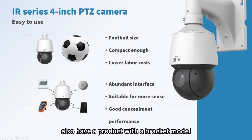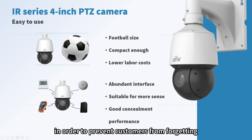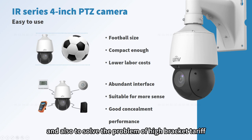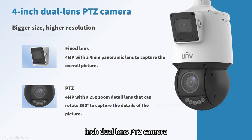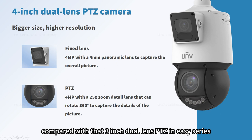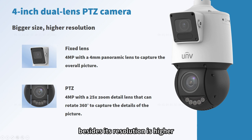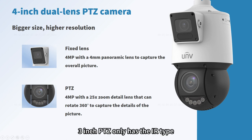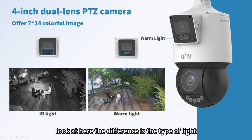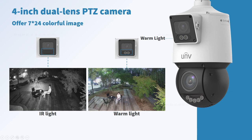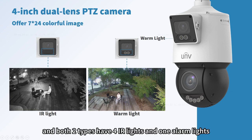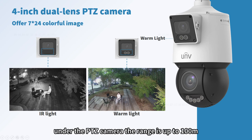We also have a product with a bracket model to prevent customers from forgetting to buy or choosing the wrong brackets, and to solve the problem of high bracket tariffs in some regions. The other star product of the Prime Series is our 4-inch dual-lens PTZ camera. Compared with the 3-inch dual-lens PTZ in the Easy Series, the size is bigger and the resolution is higher — both fixed lens and PTZ are 4 megapixel for a clearer image. The 4-inch dual-lens PTZ has two types: one with IR lights and one with warm LED lights. The IR type has two IR lights under the fixed focus lens with a range up to 30 meters, and the warm light range is up to 10 meters. Both types have four IR lights and one alarm light under the PTZ camera with a range up to 100 meters.